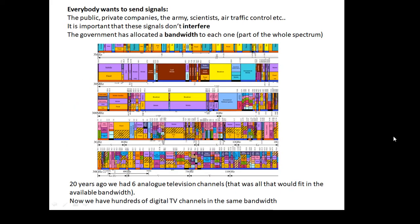Now, everybody wants to send signals. You know, there's public, there's private companies, there's the army scientists, air traffic control, ham radio, radio, normal radio, digital radio. Everybody wants to send signals. And it's very important that all these signals don't interfere with each other. So everybody gets a little bit of a chunk of the possible frequencies that you might want to use. The government allocates a bandwidth. A bandwidth is part of the electromagnetic spectrum that they are allowed to use. For example, mobile phones are allowed a certain bandwidth.